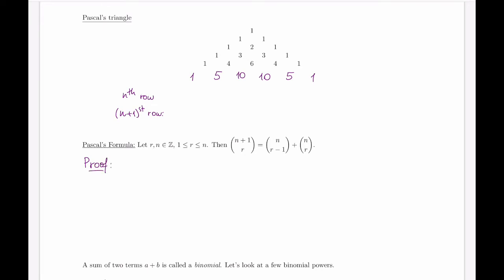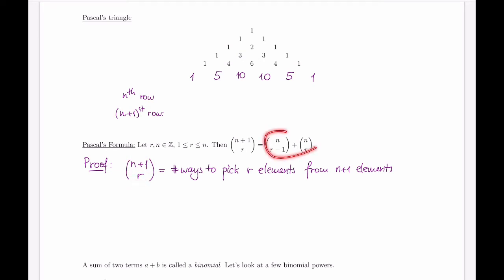Let's look at the left-hand side: n+1 choose r. In terms of counting, this represents the number of ways to pick r elements — order doesn't matter — from n+1 elements. So we have n+1 available elements and we're choosing r of them. Looking at the right-hand side, because both sides are equal, this is counting the same thing in two different ways. So how else can we think about choosing r elements from n+1 elements?